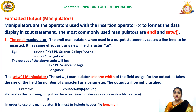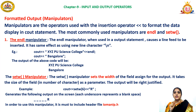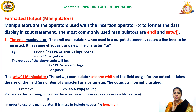The setw manipulator sets the width of the field assigned for the output, similar to the Tab key in your keyboard. For example: cout << setw(6) << r; Here r takes 1 byte and the remaining 5 bytes are given as space before that value. To use manipulators, you must include iomanip.h in your program.